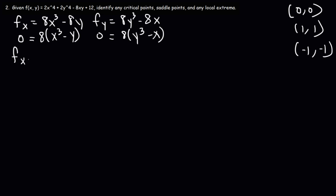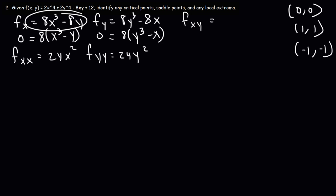Now let's calculate the second partial derivatives. Differentiating f sub x with respect to x, 8y becomes 0 and the derivative of 8x cubed is 24x squared. So f double x is 24x squared. Now finding f double y: 8x goes to 0 and the derivative of 8y cubed is 24y squared. For the mixed derivative f sub xy, differentiating f sub x with respect to y: 8x cubed goes to 0 and the derivative of negative 8y is negative 8. So f sub xy equals negative 8.